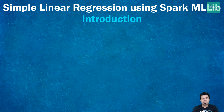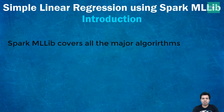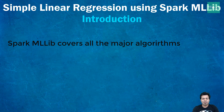Spark MLlib comes with popular algorithms in regression, classification, clustering, and the dimensionality family of algorithms. It also supports recommender systems like content-based filtering and collaborative filtering. For basic statistics, it supports summary statistics, hypothesis testing, correlation, as well as random data generation techniques like normal and Poisson distributions. I will be covering all these topics in upcoming videos, so follow this series completely.